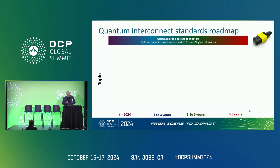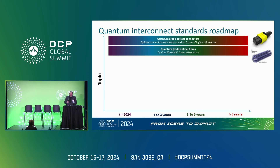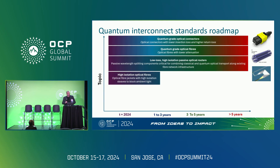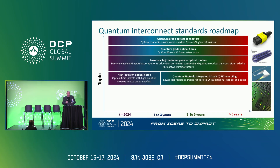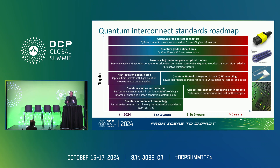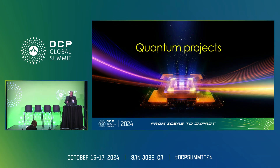Some of the most important areas we would look to standardize include: quantum-grade optical connectors with very low loss; quantum-grade optical fibers with very low attenuation; low-loss, high-isolation passive optical routers like AWGs — because if you're using the same networks for classical and quantum communication, you need to bypass single photons around EDFAs and amplifiers that would destroy quantum properties. Also: high-isolation optical fibers that don't let in any ambient light; benchmarks for extremely low fiber-to-PIC coupling; quantum sources and detectors; single photon sources; and interconnected cryogenic environments.